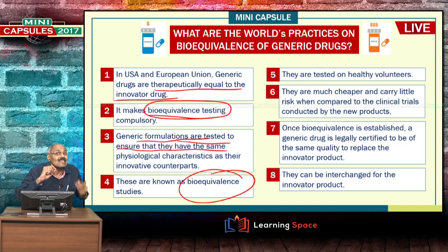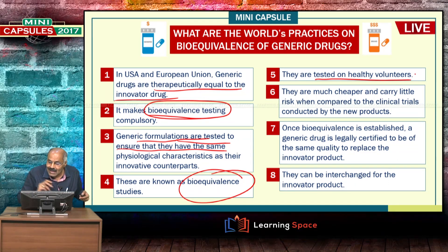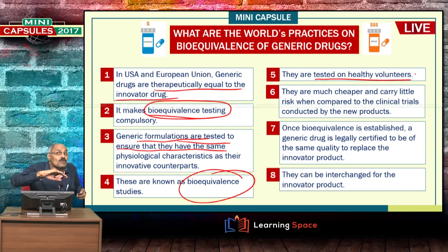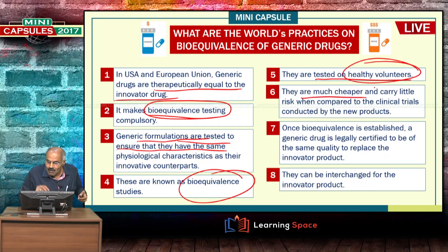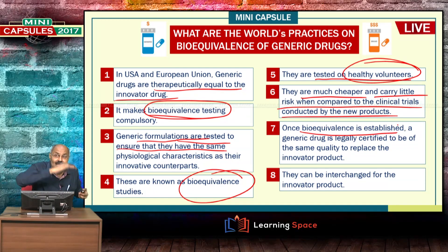Bioequivalence studies confirm that the generic drug has the same physiological characteristics as the innovator drug, and these are strictly implemented. Testing is conducted on healthy volunteers. In contrast, innovator drugs go through extensive clinical trials. Generic drug studies on healthy volunteers are much cheaper and carry very little risk compared to the clinical trials conducted for new products.